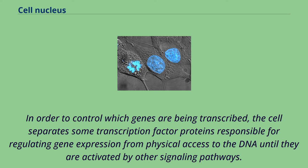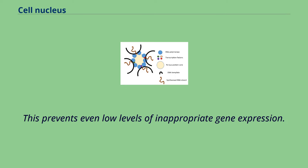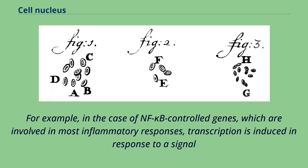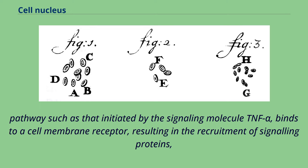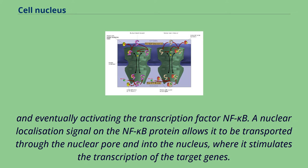For example, in the case of NF-κB controlled genes, which are involved in most inflammatory responses, transcription is induced in response to a signal. Pathways such as that initiated by the signaling molecule TNF-alpha bind to a cell membrane receptor, resulting in the recruitment of signaling proteins and eventually activating the transcription factor NF-κB. A nuclear localization signal on the NF-κB protein allows it to be transported through the nuclear pore and into the nucleus, where it stimulates the transcription of the target genes. The compartmentalization allows the cell to prevent translation of unspliced mRNA.